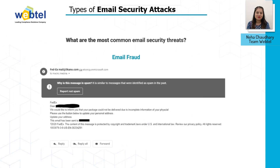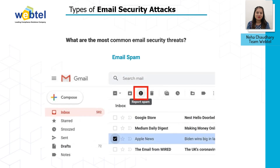Let us talk about the types of email security attacks. The first most common email security threat is email fraud. Emails are the most common source of fraud attacks, especially in organizations. Fraud email may range from scammy schemes to business email compromise (BEC) — messages in the form of formal communications that trick users or organizations to transfer money into illicit email accounts, hampering the email security of the organization, as shown in the attached screenshot.